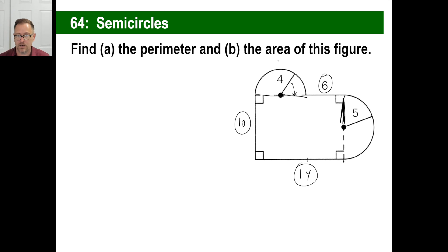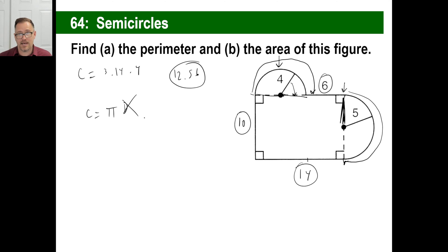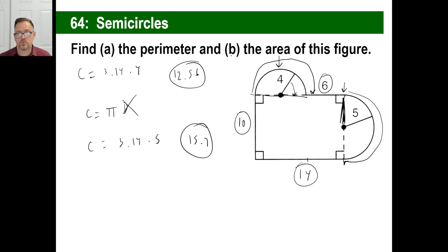Now let's get the perimeter of the curved parts. Don't forget, perimeter for a circle is called circumference. We have two half circles here, not whole circles. The formula for circumference of a half circle is pi times the radius. For the first one: 3.14 times 4 equals 12.56. For the second one: the diameter is 10 so the radius is 5, giving us 3.14 times 5 equals 15.7. You add all that stuff together and that's your perimeter.